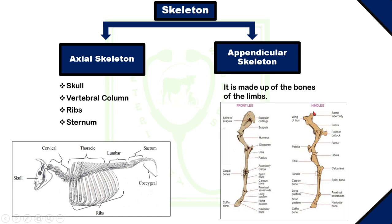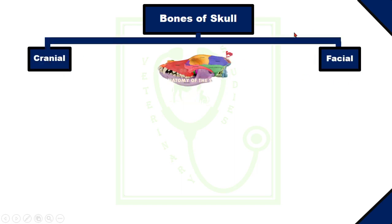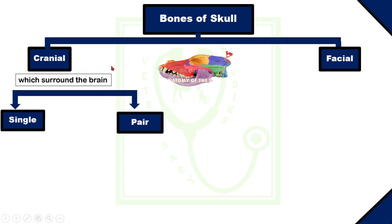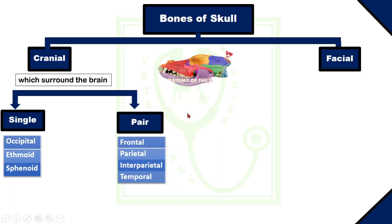Now, in the axial skeleton, first of all I am going to tell you about the skull. Skull forms the basis of the head of animals. Bones of the animal skull consist of cranial bones and facial bones. Cranial bones are those bones which surround the brain or central nervous system to form the cranium. Cranial bones consist of single and pair bones. Occipital, ethmoid, and sphenoid bones are single bones, whereas frontal, parietal, interparietal, and temporal bones are pair bones.